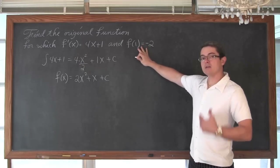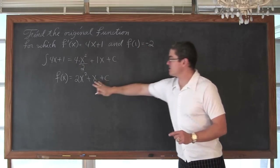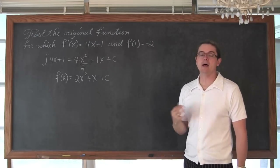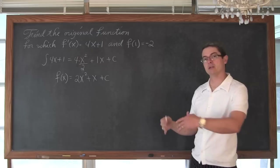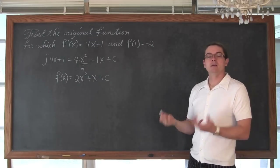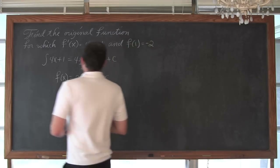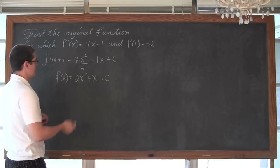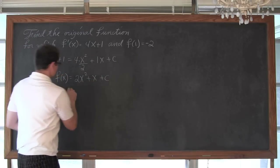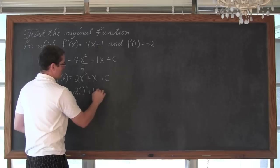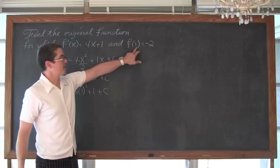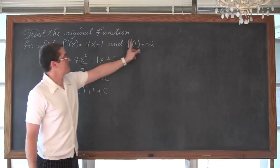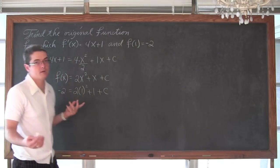Unlike my previous video, now we are given a little bit of extra information. This function passes through the point (1, negative 2), or when x is equal to 1, f of x is equal to negative 2. Plug in 1, get out a y value of negative 2. So that means f of 1 — when I take the value of 1 and plug it into this function — the overall value is going to equal negative 2. So negative 2 is equal to 2 times 1 squared plus 1 plus C. I am plugging in my x value of 1; when x equals 1, the x's come out and 1 goes in their place, and the entire function's value is equal to negative 2.